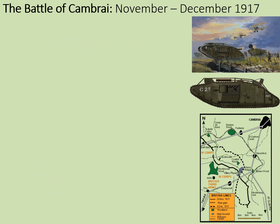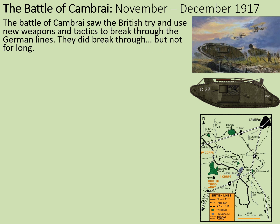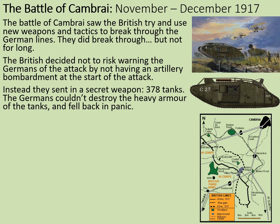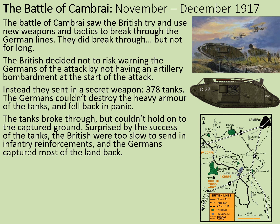Next up we have the Battle of Cambrai, between November and December 1917. The British tried new weapons and tactics to break through the German lines — and they did break through, but not for long. The British decided not to warn the Germans with an artillery bombardment; instead they sent in a secret weapon: 378 tanks. The Germans couldn't destroy the heavy armour and fell back in panic. The tanks broke through, but couldn't hold on to the captured ground. It's worth noting this isn't the first use of tanks — that was at Flers-Courcelette during the Battle of the Somme — but at Cambrai they had matured to a point where they were more dependable.